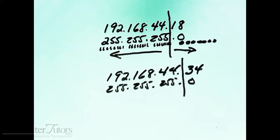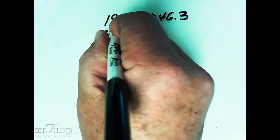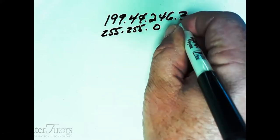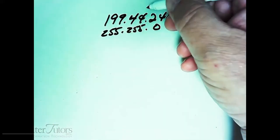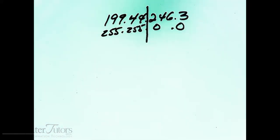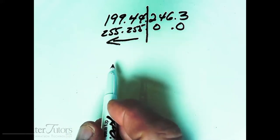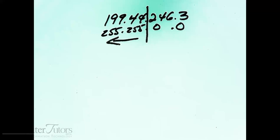Let me write down another IP address and let you think about it: 199.44.246.3. The first question you should ask yourself is: what's the network address and what's the host address? Don't say 199.44.246 is the network address and 3 is the host address, because I haven't given you the subnet mask. So let me write the subnet mask 255.255.0.0. The line separating is here now, so the network address is 199.44, and the host address is 246.3.